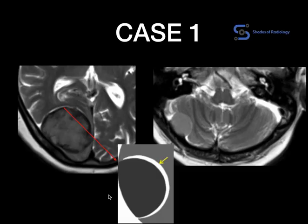Let us look at Case 1: a posterior fossa or occipital meningioma on the right side. You can see a CSF cleft and small pial vessels interposed between the lesion and the cerebral cortex. This is called the meniscus sign or CSF cleft sign. In another case along the cerebellar convexity, again the CSF is interposed between the lesion and the cerebellum.